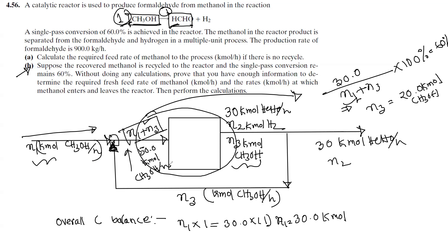Solving the equation, N3 is equal to 20 kmol CH3OH per hour.